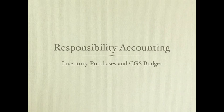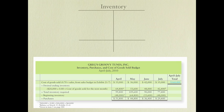This is part three in our responsibility accounting series where we'll be looking at inventory purchases and the cost of goods sold budget. In our discussion we're going to combine these budgets into one, so instead of having separate inventories, purchases, and cost of goods sold budgets, we're going to have one combined inventory purchases and cost of goods sold budget.